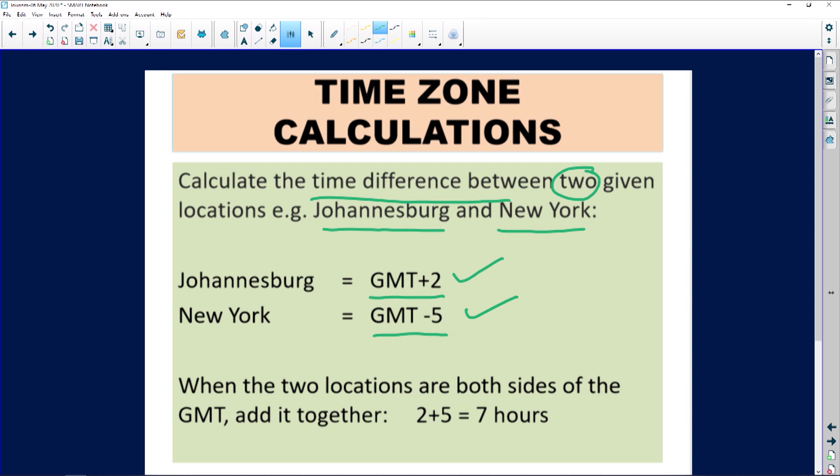Now it's very simple. When two locations are both sides of the GMT, in other words the GMT line is in the middle, or you can even look at the symbols - one is a plus, the other one is a minus - then it's very simple, you literally add the two numbers together. You're not going to say plus two plus minus five, that's mathematical, and that is where most of us make the mistake. The plus and the minus here in tourism time zone calculations indicates direction.